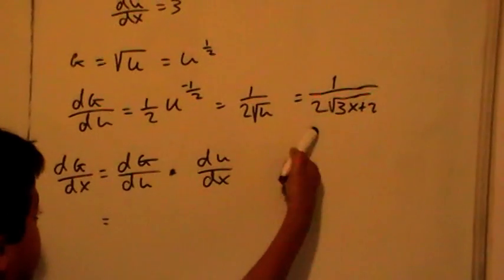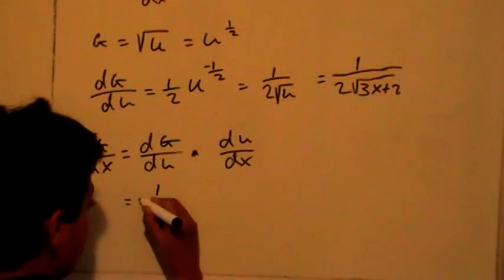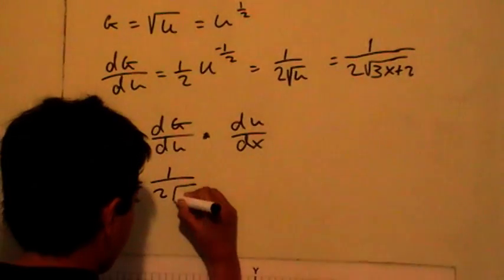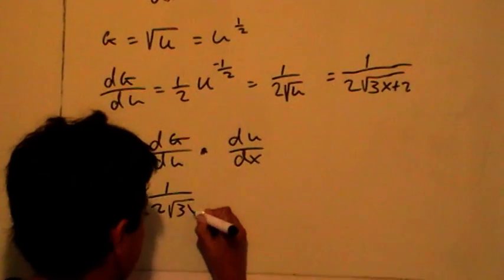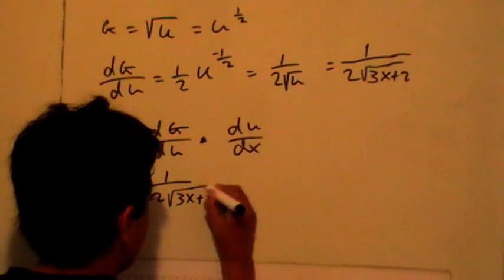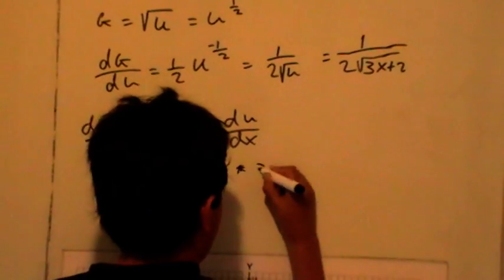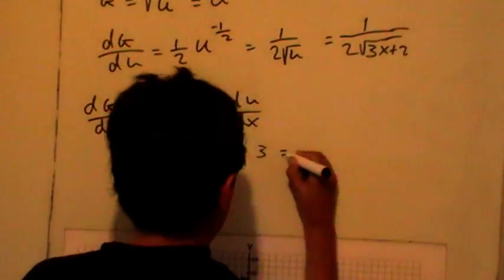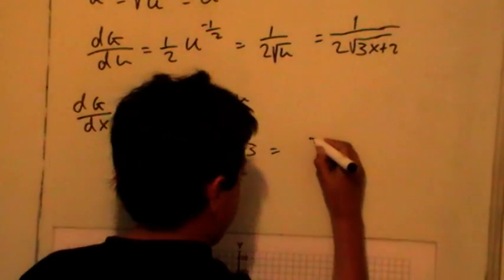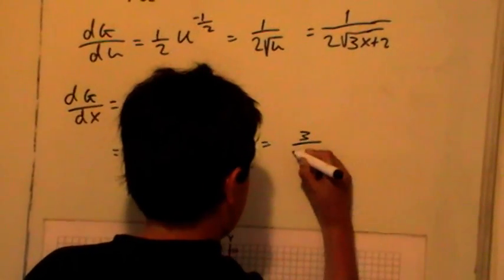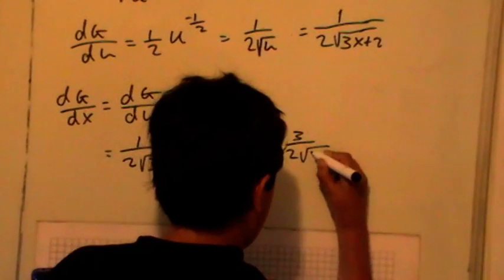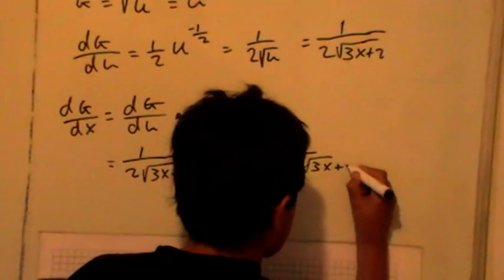Okay, dg over du is that, 1 over 2 root 3x plus 2 times 3. When you expand that, or simplify it, you get 3 over 2 root 3x plus 2.